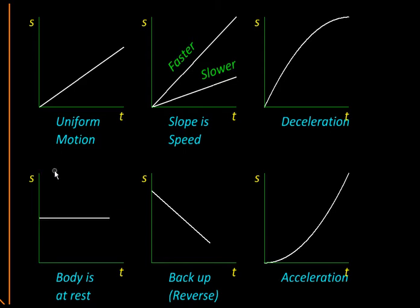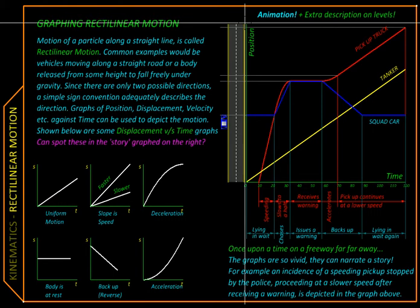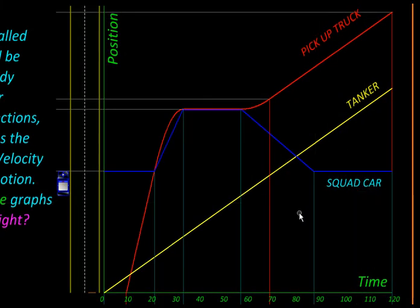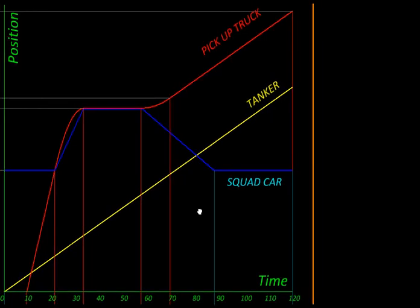Now let us see how we can use these graphs as building blocks and put together an entire story of something that happened on a highway once upon a time. First we are going to look at this whole interaction purely in the form of graphs. So there are three vehicles here. This red graph belongs to a pickup truck. This yellow line belongs to a yellow tanker, and this blue one is the police car.